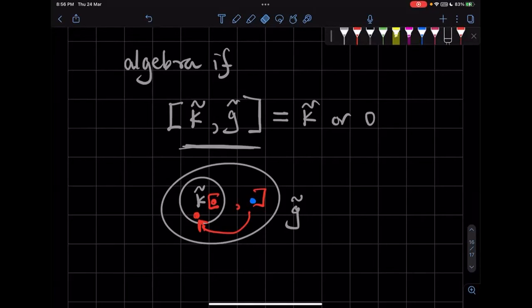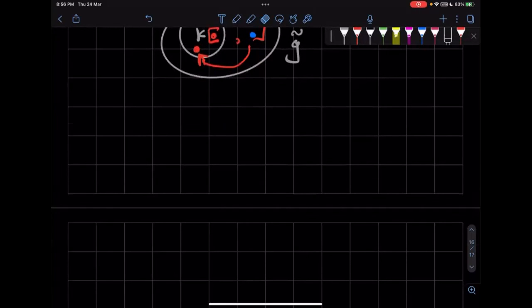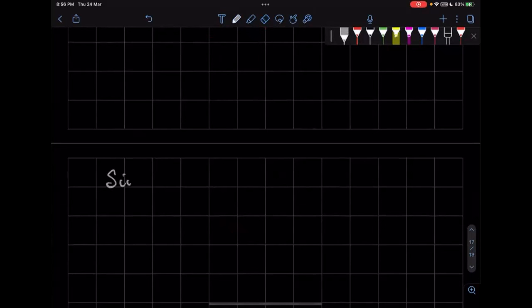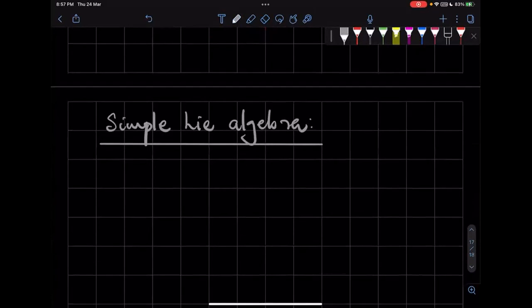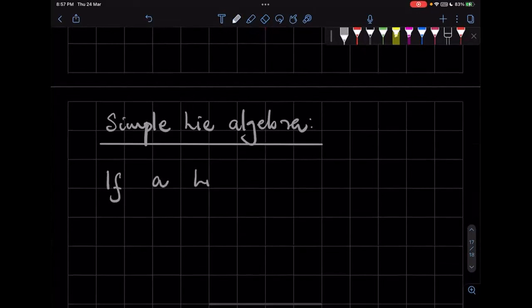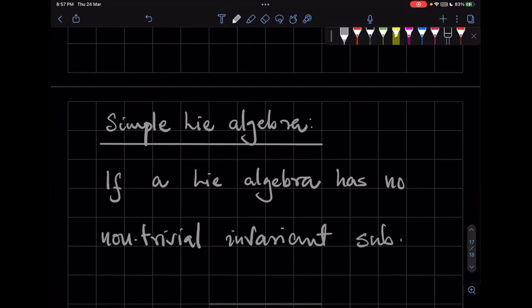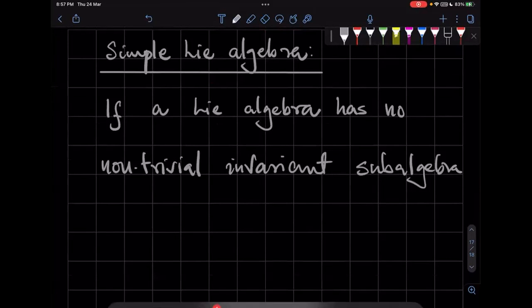All right, so now we are ready to define a simple Lie algebra. So if a Lie algebra has no non-trivial invariant subalgebra, then it is a simple Lie algebra.